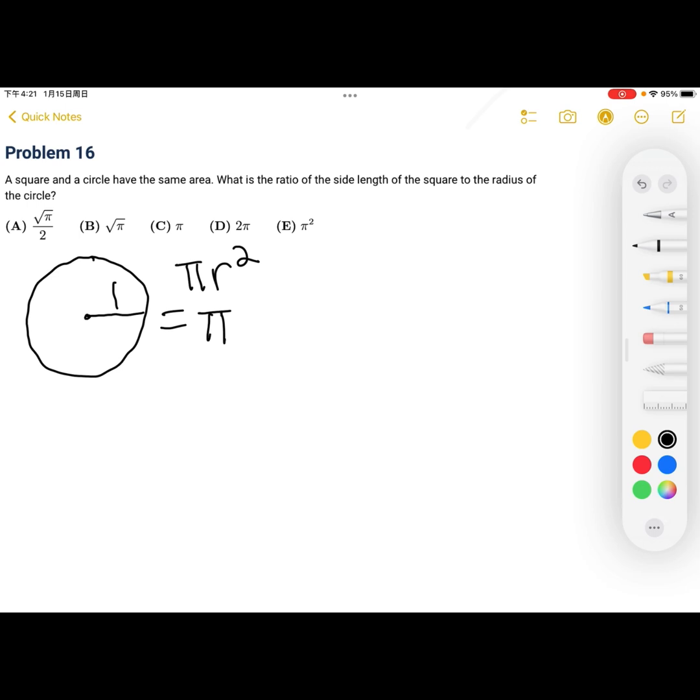Now, we have that the area of the circle and the square are the same. And the area of a square is equal to side squared, or s squared. So, now we can replace pi with a to get pi equals s squared. Solving for s, we get that s is equal to the square root of pi.